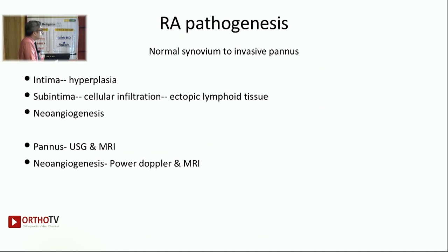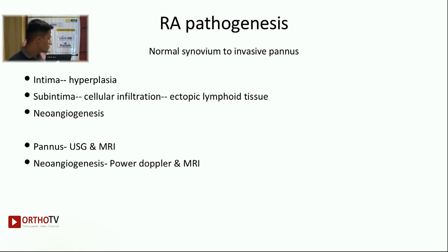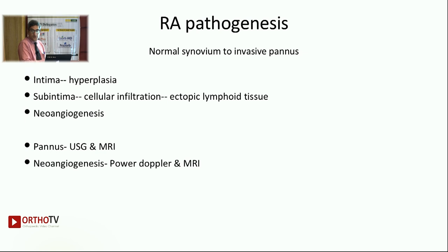Coming to exactly what we wanted to know: how does rheumatoid actually destroy the joints and cartilages? Because of rheumatoid, pathogenesis-wise, the normal synovium — which is two-layered, intima and sub-intima — gets converted into invasive pannus. There is hyperplasia of the intima from a single layer into a multiple-layer structure, and in the sub-intima, there is actual cellular infiltration and ectopic lymphoid tissue, just the way lymphoid granules form in lymph nodes. Multiple ectopic lymphoid granules form — this is where the autoimmunity has finally homed in on the synovium. Because of this, there is a lot of neoangiogenesis, drawing more and more lymphocytes and other cells to the synovium.